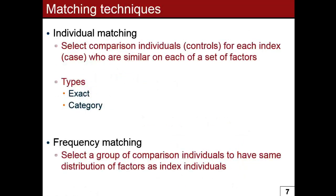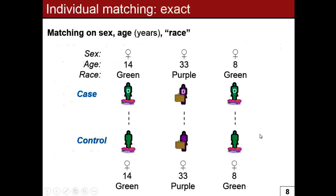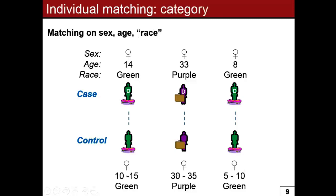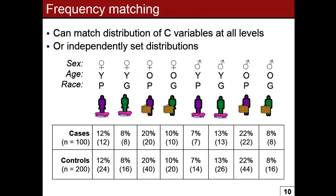We were ending off talking about different methods for matching: individual matching and frequency matching. Individual matching recruits controls one-to-one, two-to-one, and so forth, that look like your cases on factors of interest such as sex, age, and race. In frequency matching, you generally match the distribution of confounders in the control group to that of the case group, rather than linking a specific control to a specific case.